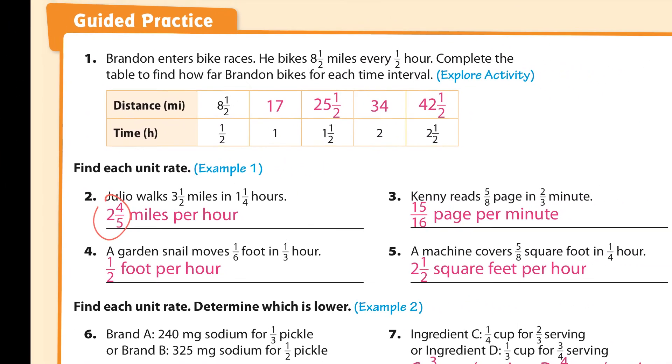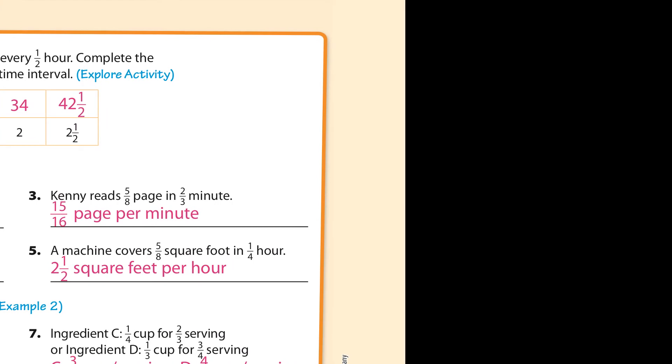Number 3, that would be 5 eighths divided by 2 thirds. So that's 5 eighths times 3 halves, because you have to flip the second fraction. I can't cross cancel anything, so that's 15 out of 16. There you go, 15 sixteenths.